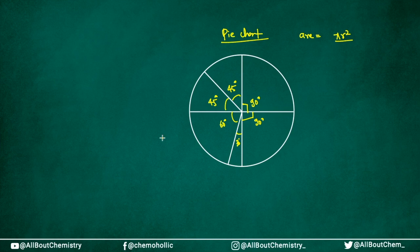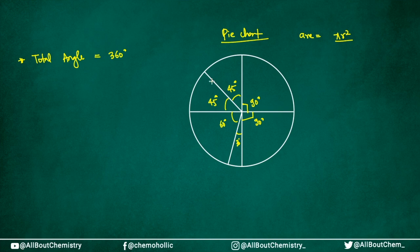Some key points you should know about pie charts: the total angle in a pie chart is 360 degrees. You have to remember this — the complete angle of the pie chart is 360 degrees, as it is a complete circle.